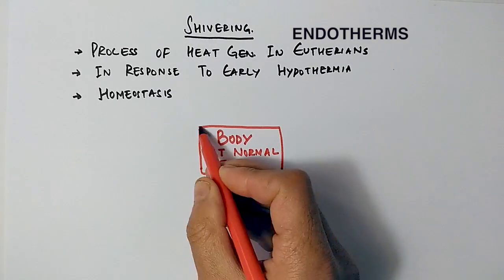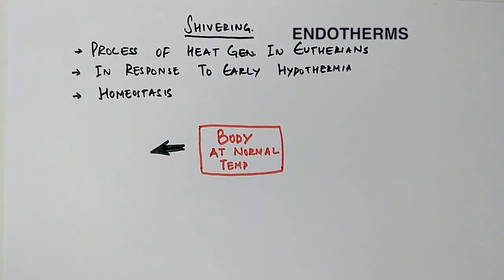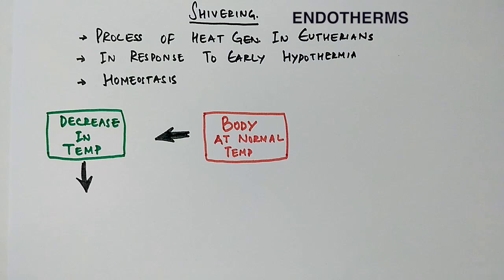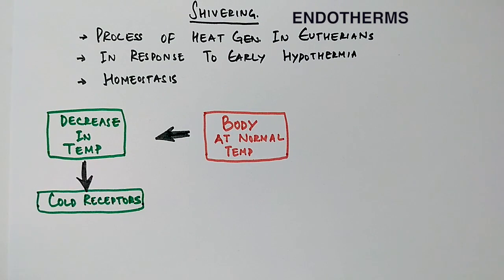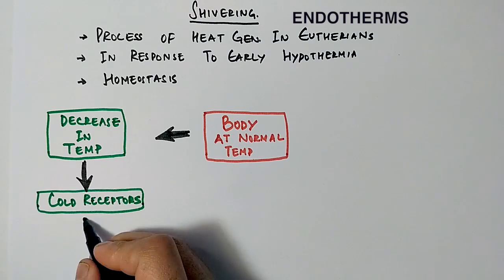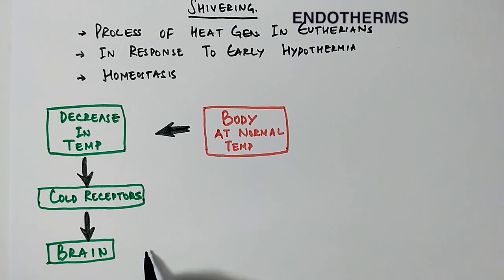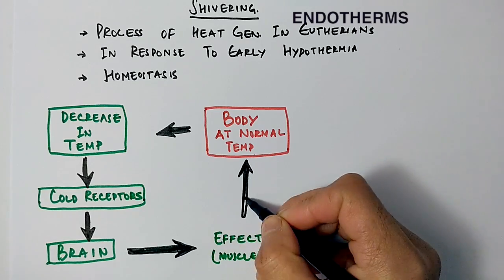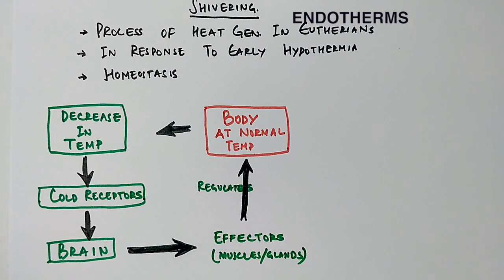Now we will see how homeostasis occurs in the body. When there is a fall in environmental temperature, the body is at normal temperature but senses a decrease. This is detected by cold receptors, which are in the form of fibers. They send signals to the brain — mainly the hypothalamus, which is the thermoregulatory part of the brain. The brain sends back signals via effectors such as muscle contraction and hormone secretion to regulate body temperature back to normal.